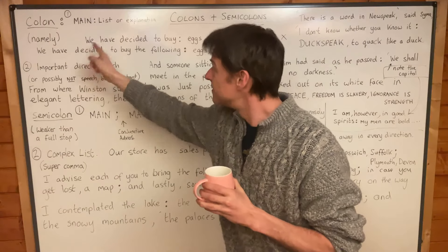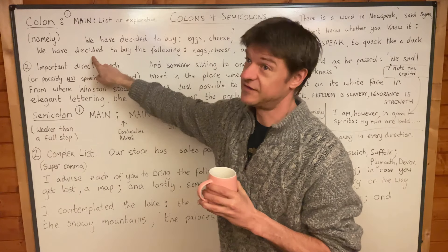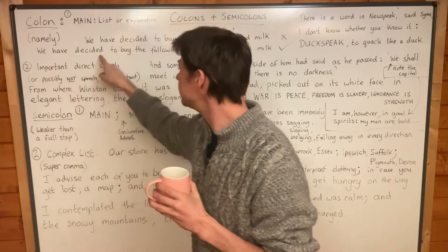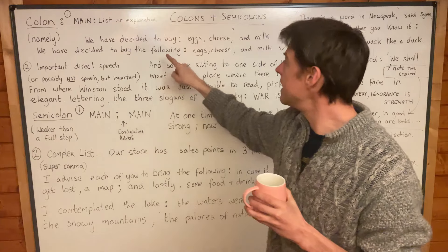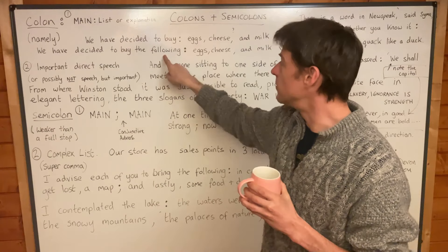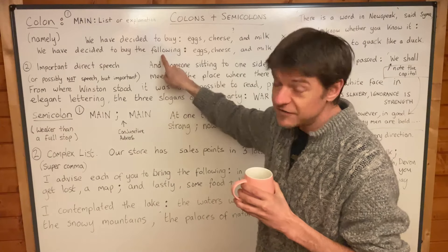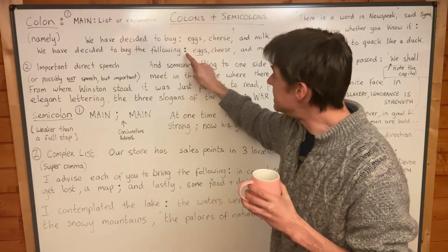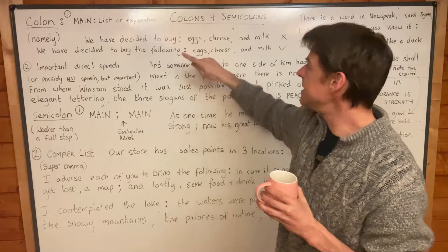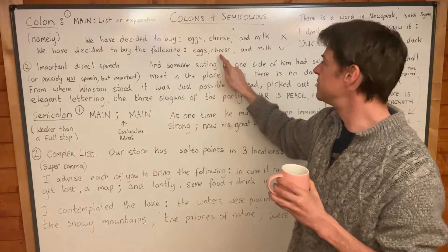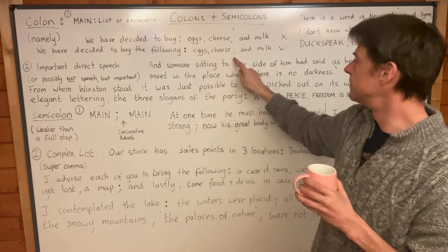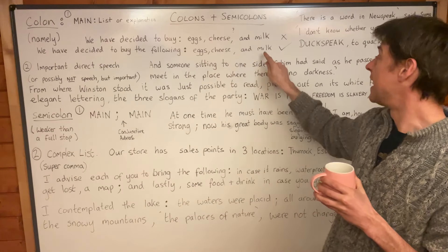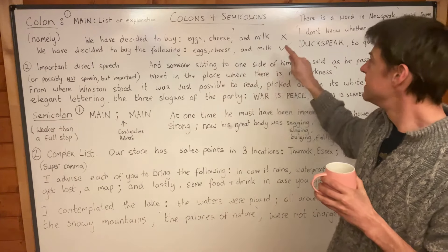Here's an example. The correct version is: 'We have decided to buy the following' — and that main clause must be there — namely, eggs, cheese, and milk. That's an Oxford comma, by the way.